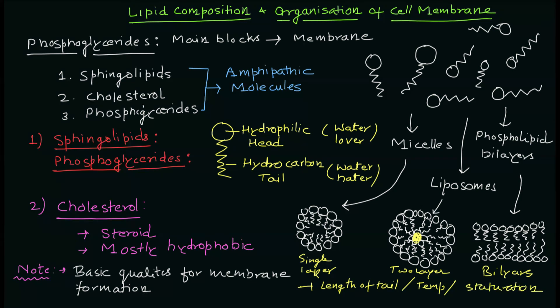And the formation of this membrane is dependent on the length of the tail, it is also dependent on the degree of saturation, it is dependent on the temperature. So depending upon all these factors you're going to have different types of structures.